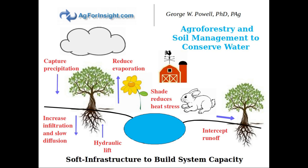With trees, shrubs, and organics, we seek to capture more precipitation that's falling, increase infiltration, and slow its diffusion — holding that water in the soil root zone as long as possible. With trees and shrubs there is a process known as hydraulic lift, where they are able to pull water from deeper soil levels up into the crop rooting zone. We also slow and reduce evaporation, and use shading to reduce heat stress on livestock, crops, and buildings, lowering overall demand. Trees and shrubs also intercept runoff.